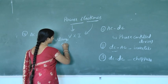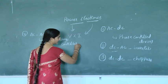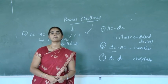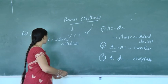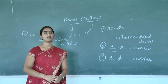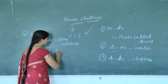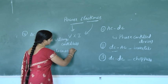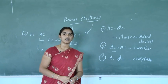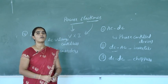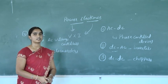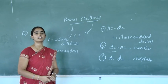Applications of AC voltage controllers include fan regulators, speed control of induction motors, and speed control of synchronous motors. If we consider converting fixed AC to variable AC by varying frequency, then we go for cycloconverters. Cycloconverters convert fixed AC to variable AC by changing frequency and voltage. The major difference between AC voltage controllers and cycloconverters is the frequency. Cycloconverters can also be represented as frequency changers.